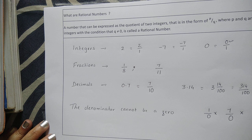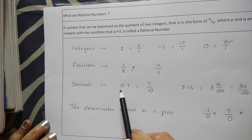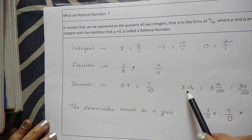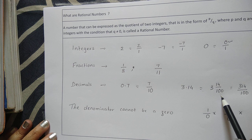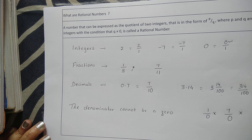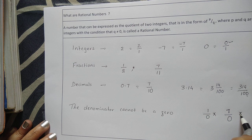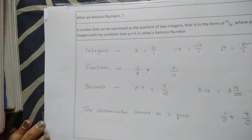Fractions also have numerator and denominator, so these are called rational numbers. Even decimals can be expressed as rational numbers. For example, 0.7 can be written as 7/10, and 3.14 can be expressed as 314/100. A rational number has numerator and denominator separated by a line, and both are integers. The one condition is the denominator cannot be 0 — so 1/0 or 7/0 cannot be a rational number.